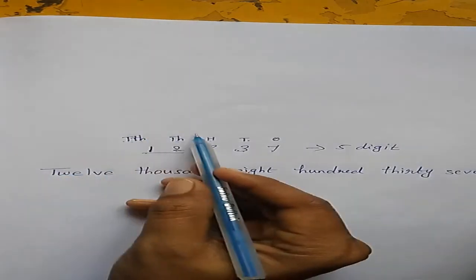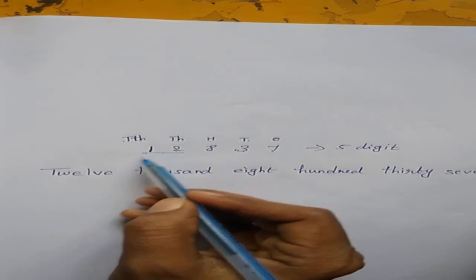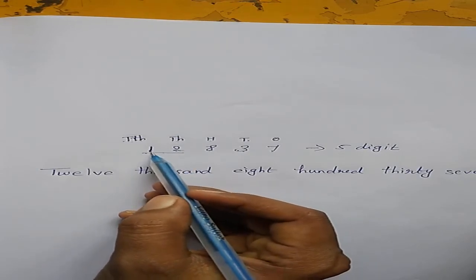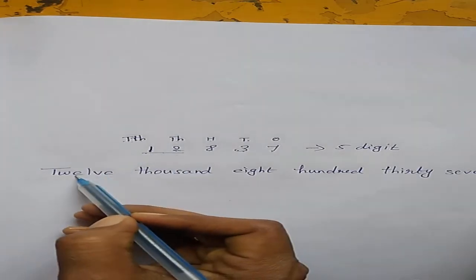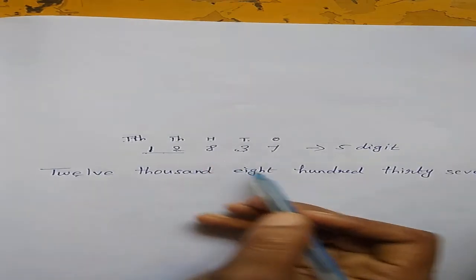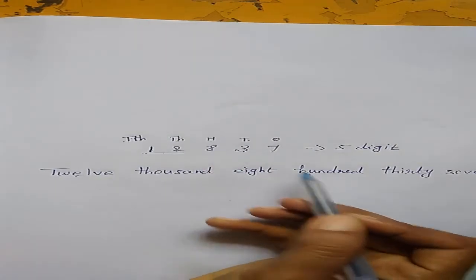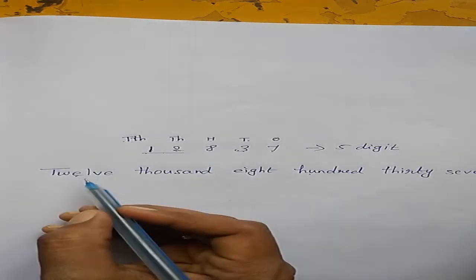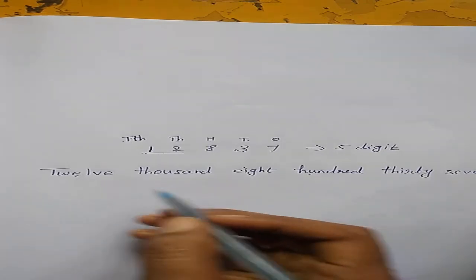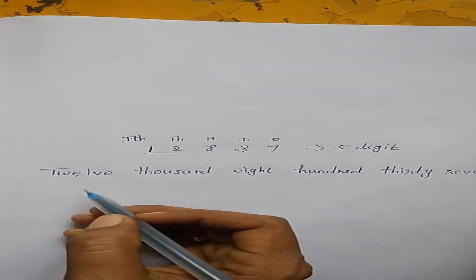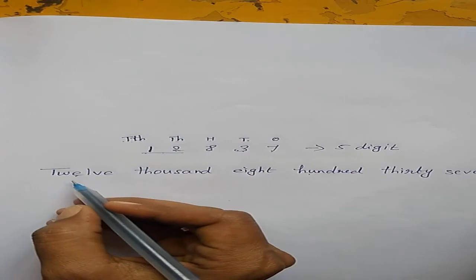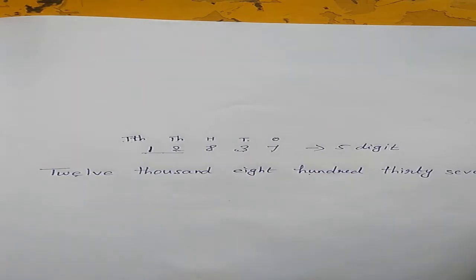Once again I repeat: this is the 12,000 thousands family. What are the numbers here? 12. So the full number is 12,837. Did you understand? Thank you, children. Have a nice day.